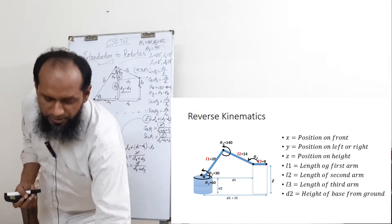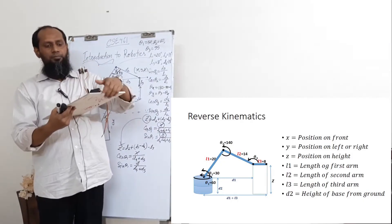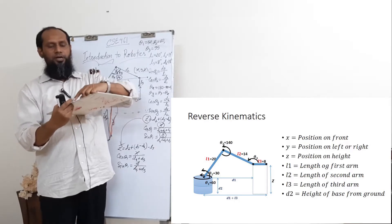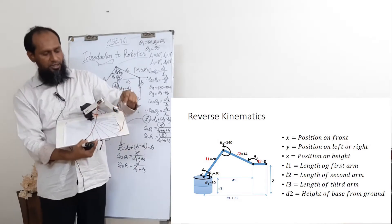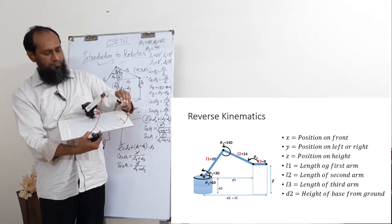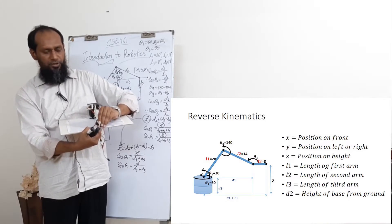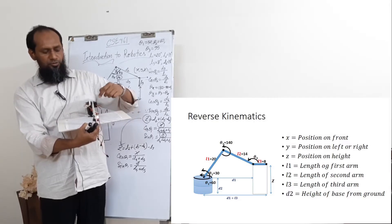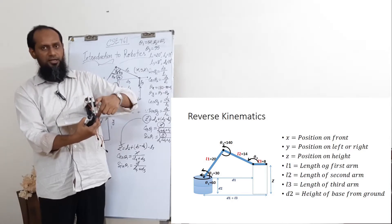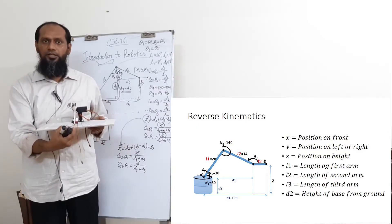Reverse kinematics means our arm is in one position but we need to reach a different point. So what does it have to do? It has to come all the way through. To do this, we need to calculate the angular value from X, Y, Z. This thing is called reverse kinematics.